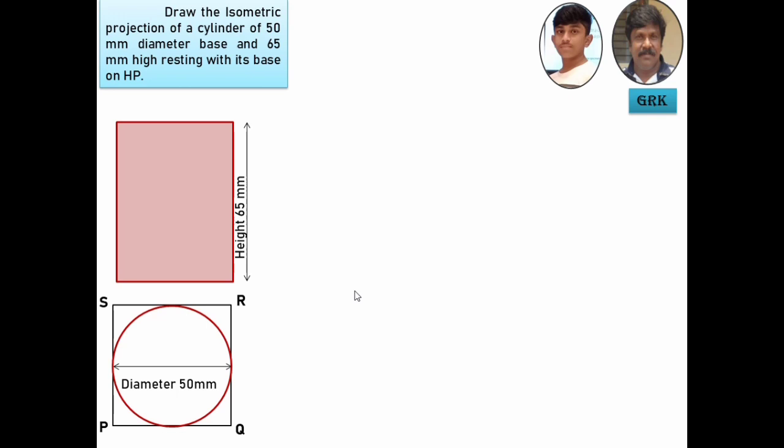So, first draw XY line, draw the sides PQ and PS by making an angle 30 degrees with this XY line. Then complete the other sides of the square, so you get the point R.